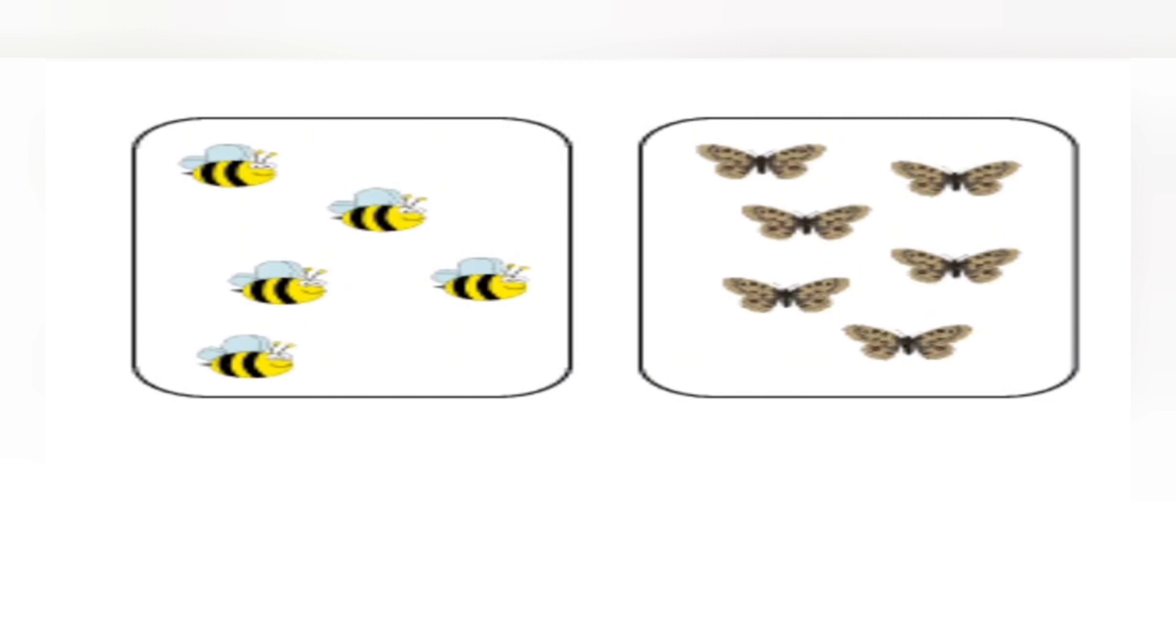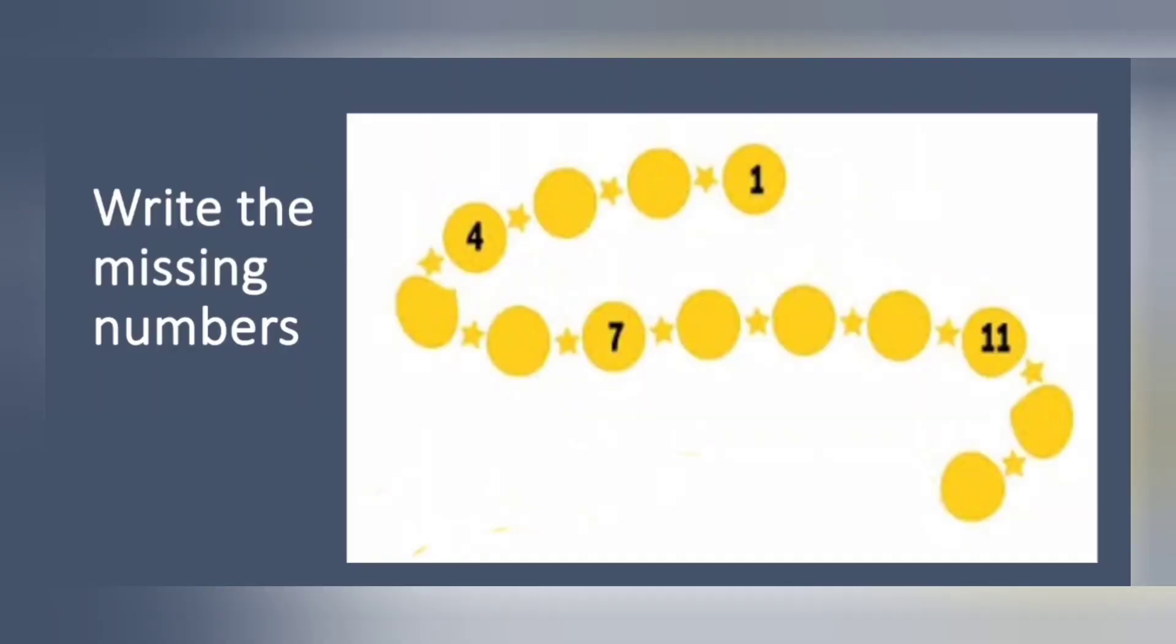Now, here are some bees are there. Some butterflies are there. Shall we have to count and write the correct number? Shall we start? Okay. You have to count with me. So that it will be easy for you. So first, bees we will count one by one. One, two, three, four, five. So how many bees are there? Five. Write that number. And then butterflies. One, two, three, four, five, six. So how many butterflies? Six butterflies. Write the number six. You are got the counting right? Very good.